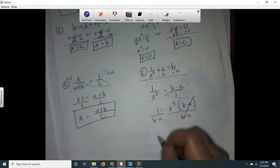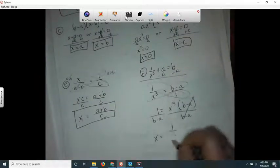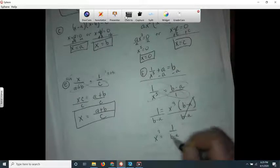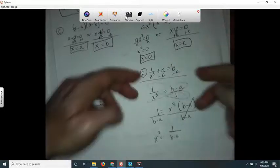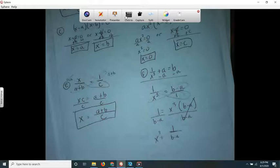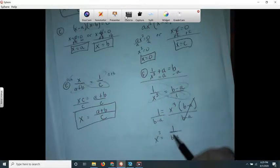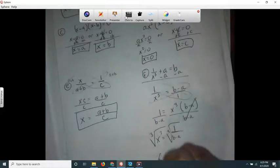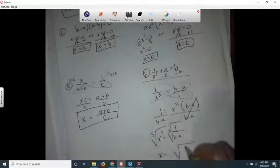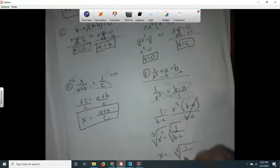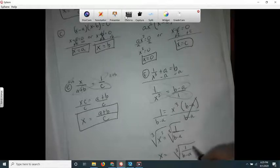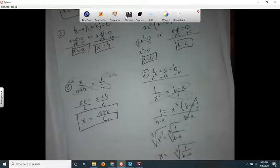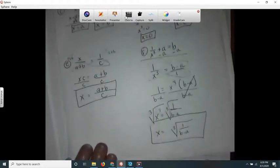So this gives me x cubed equals 1 over b minus a. So I could have just, if I would have noticed right here, I could have just taken the reciprocal of each one, right, and I wouldn't have had to do this part. Now I'm just going to take the cube root of both sides. So that gives me x equals the cube root of 1 over b minus a. And I can do some things to rationalize this. I could try to rationalize it, but I see your book just leaves it like that, so let's just leave it like that. And that's it.